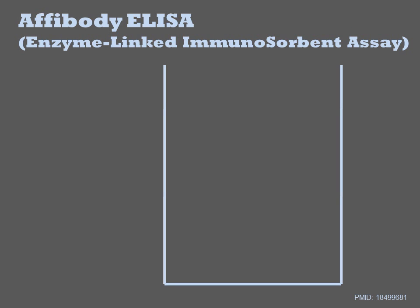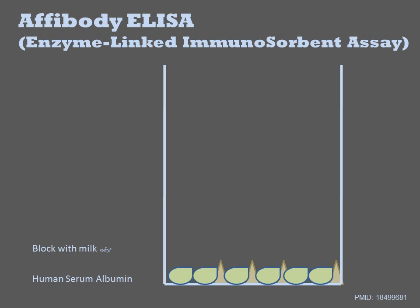I start with a maxisorb plate. ELISA plates are distinct from those used to culture cells. The polymer surface is sticky towards proteins, so when we add the human serum albumin or rat sample to the well, the protein becomes immobilized on the surface of the plate. We then block the surface with milk to coat any surfaces of the plate that did not pick up the albumin.